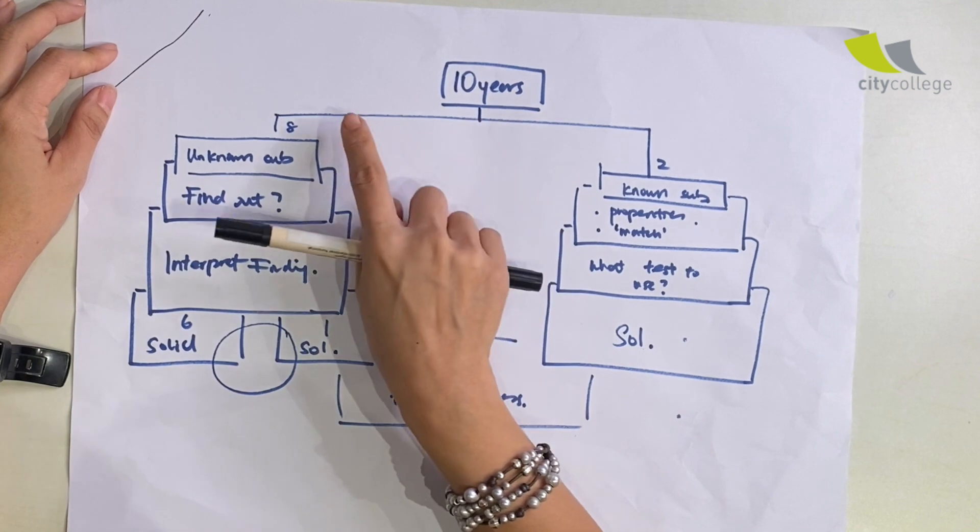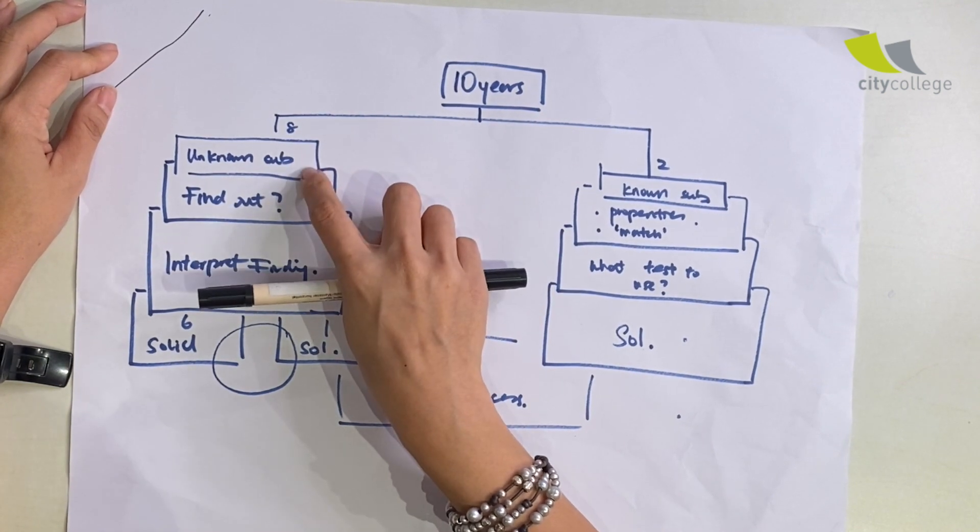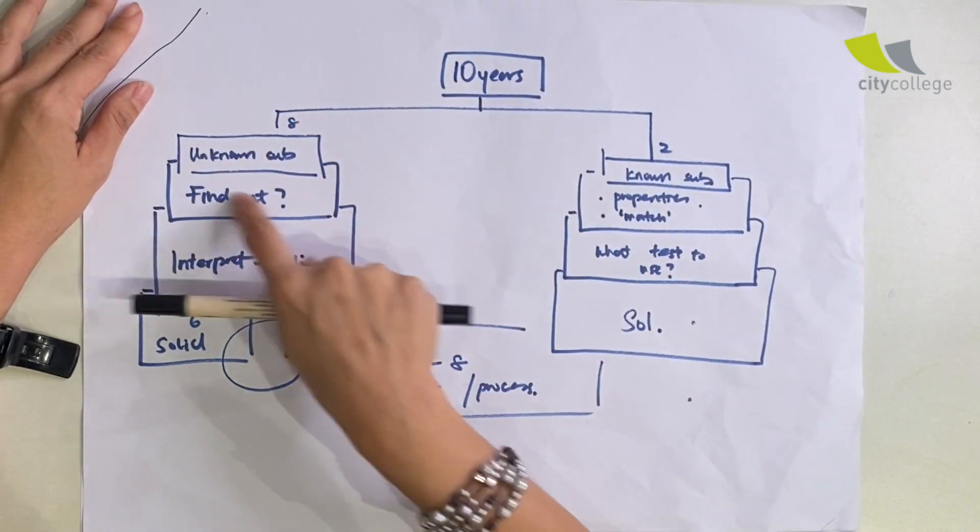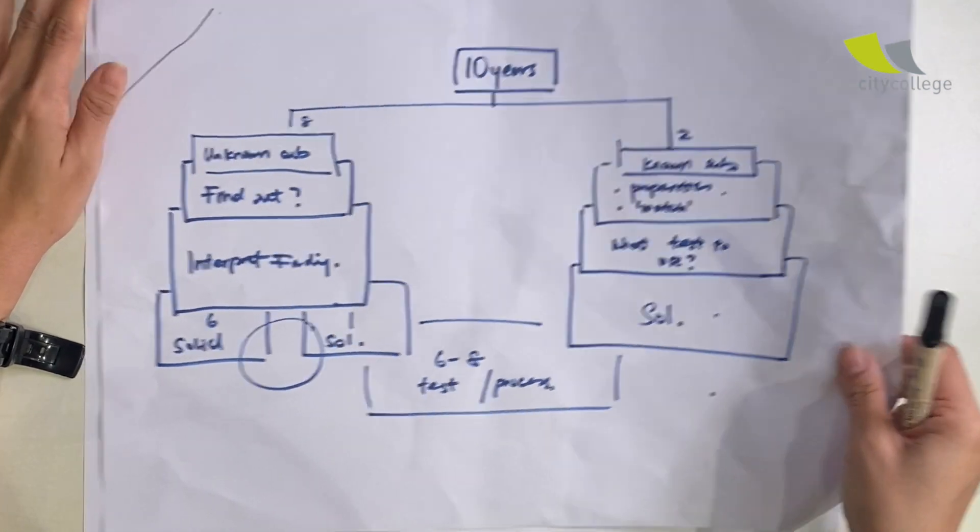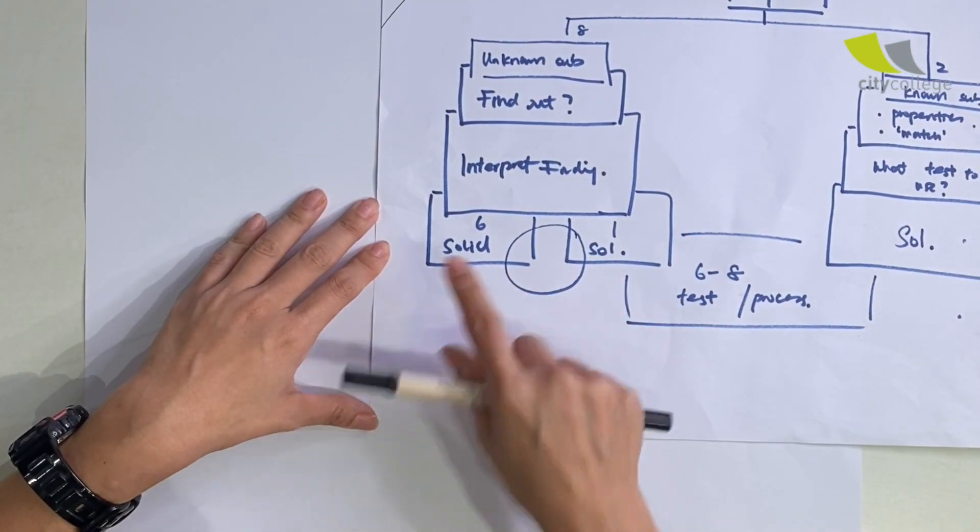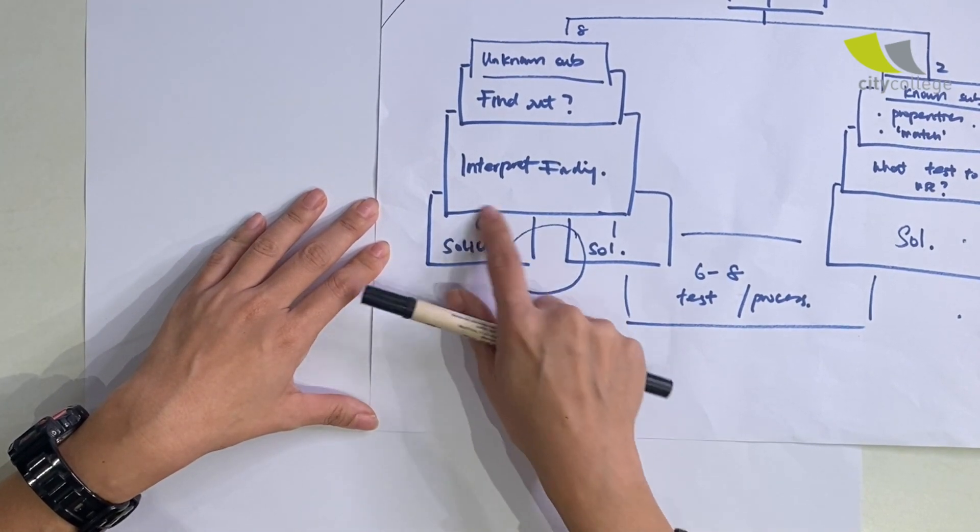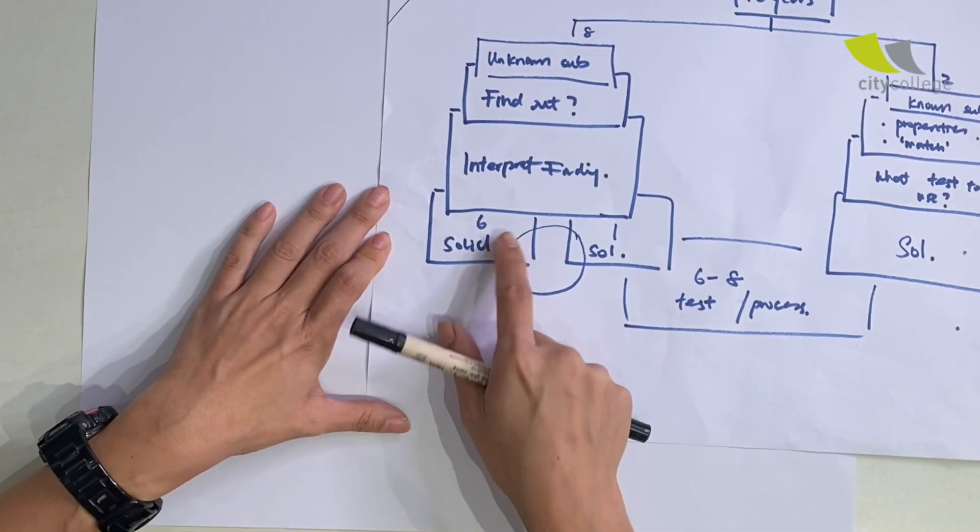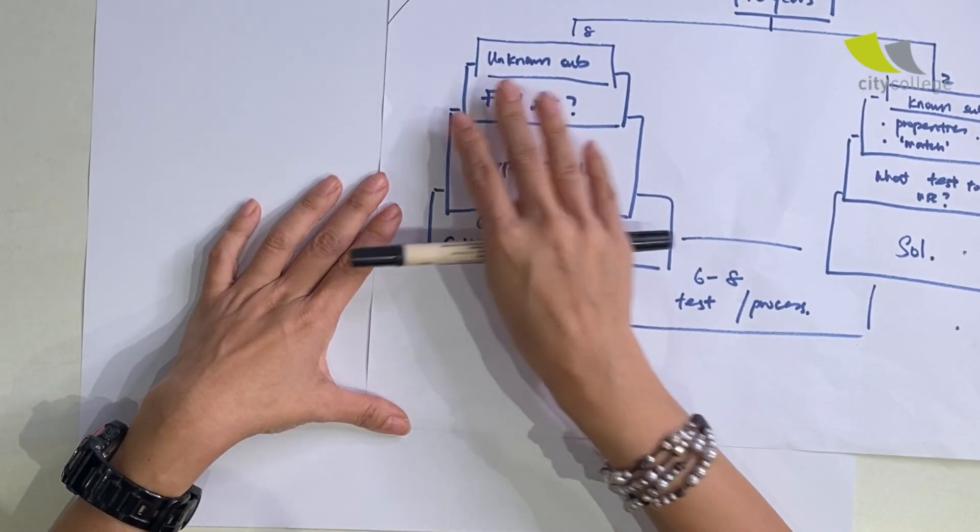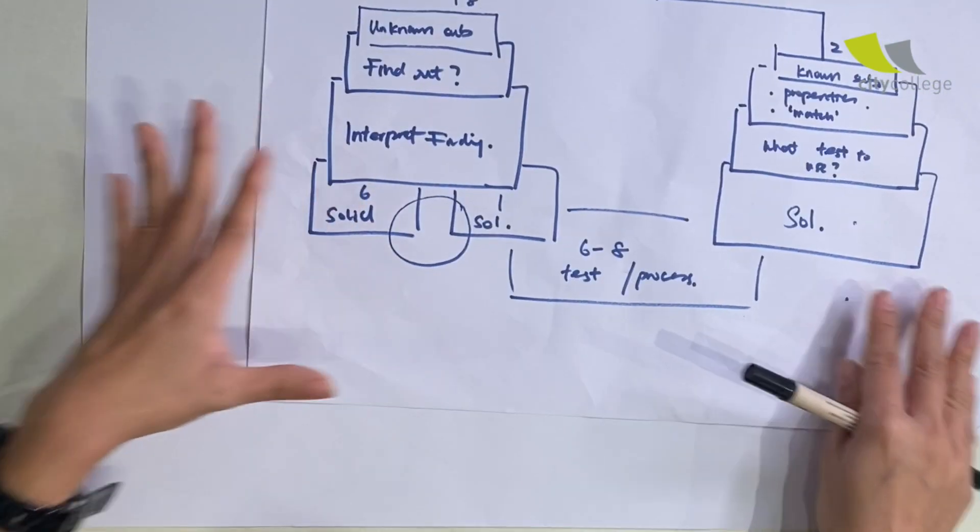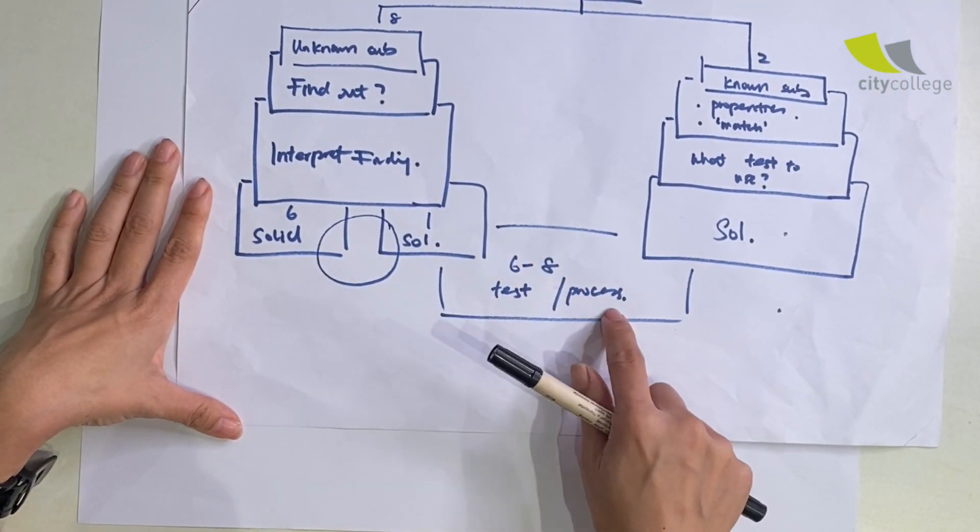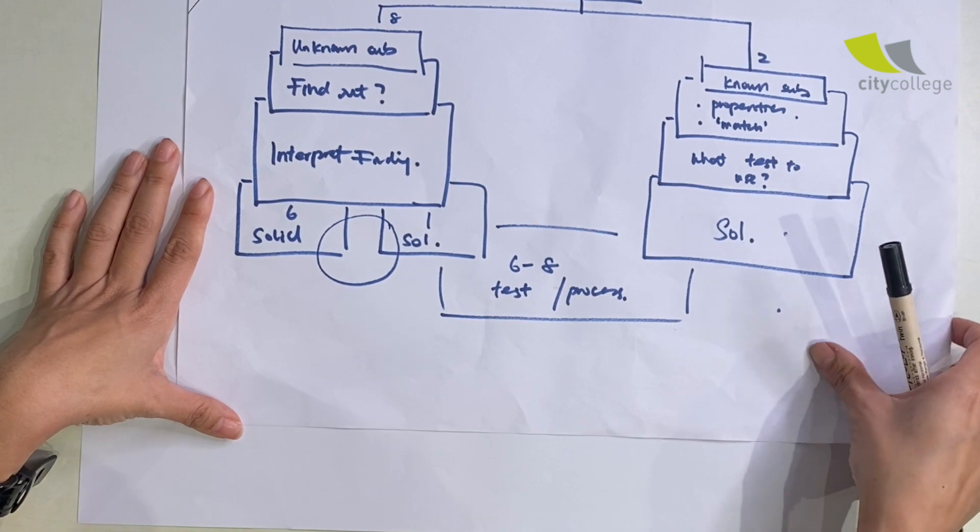With the analysis of the last 10 years of the GCE O-level chemistry practical, I told you that out of the 10 years, eight years you're asked to find the unknown, two years you're given the known. Out of the eight years of the unknown, six years you're given a solid. From the previous video, I focused on the solid and one of the processes you often use is to heat it. For both of them, something common happened: there are six to eight tests or processes that you're given.